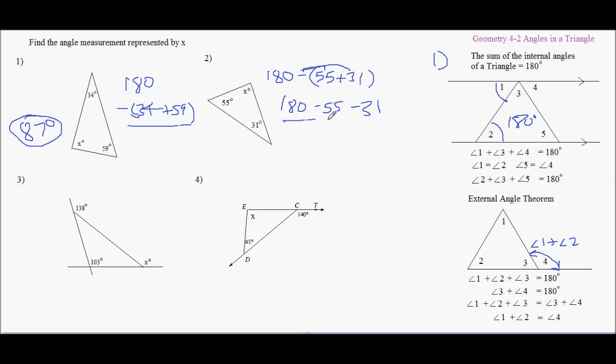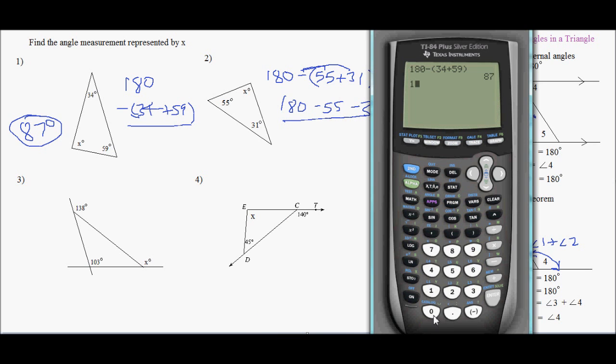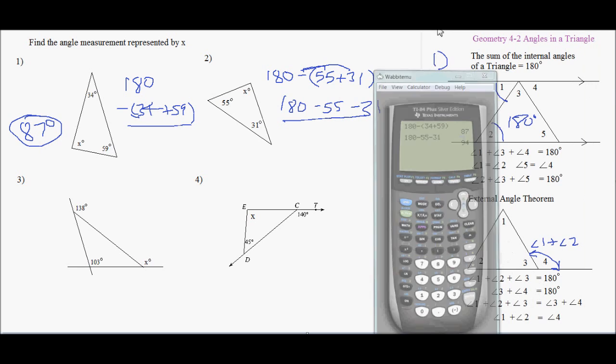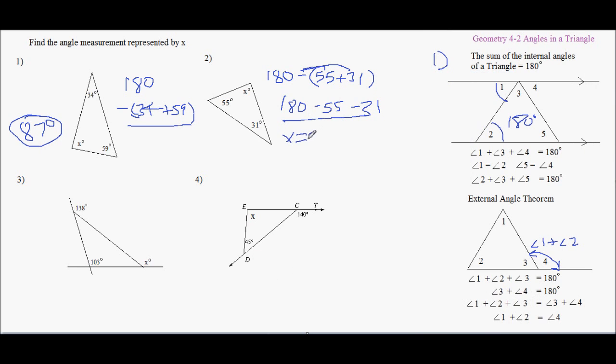So you could write it in your calculator like this too. I could say 180 minus 55 minus 31. Either way, you can do two minuses or minus the quantity, same thing, 94. So x is equal to 94 degrees.